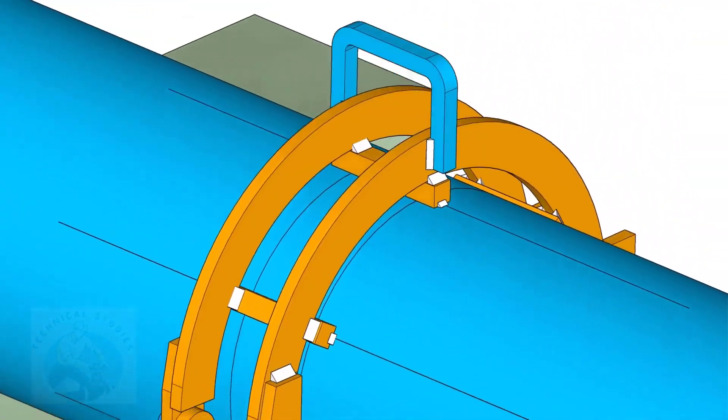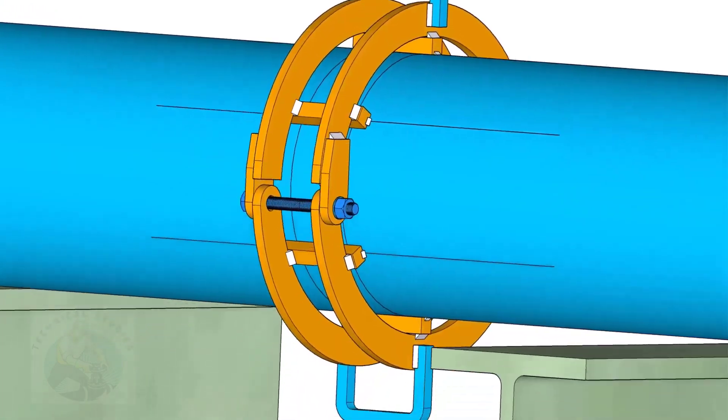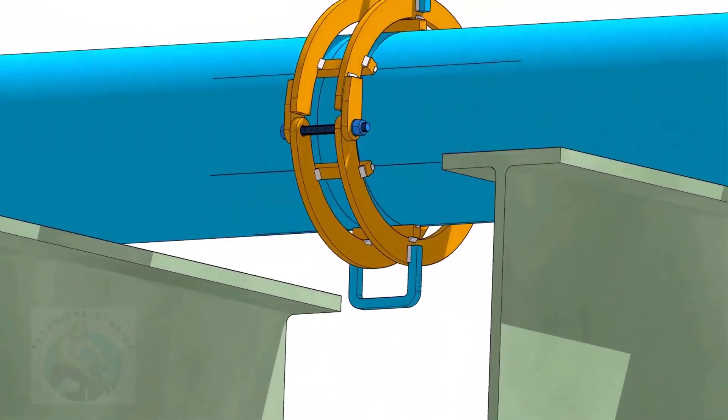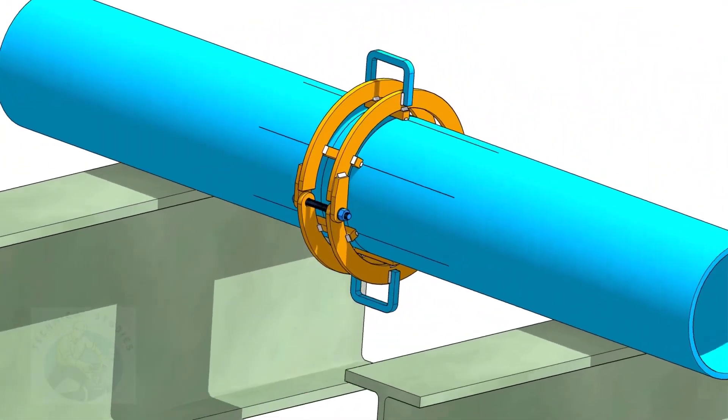After welding, cut the tacks with pipe and the square bars. Grind smooth all parts. Thank you for watching.